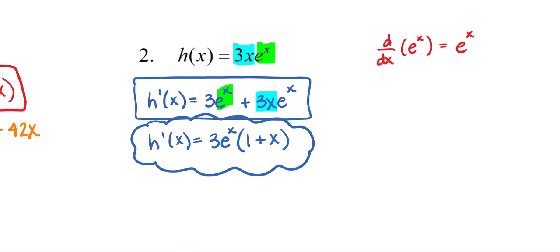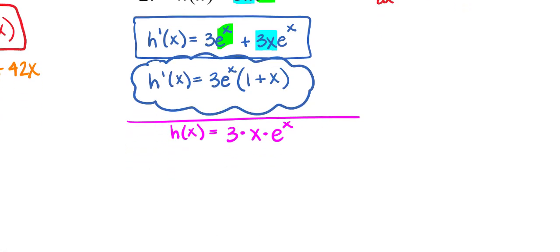Now if by chance you see this as three factors, we can do product rule with three factors, it still works. So what happens is I take the derivative one at a time. So h prime of x. Well what's the derivative of this first factor? The derivative of three is zero and then you would carry down the other two factors. So there's no need really to carry down the other two factors because zero times those would be zero.